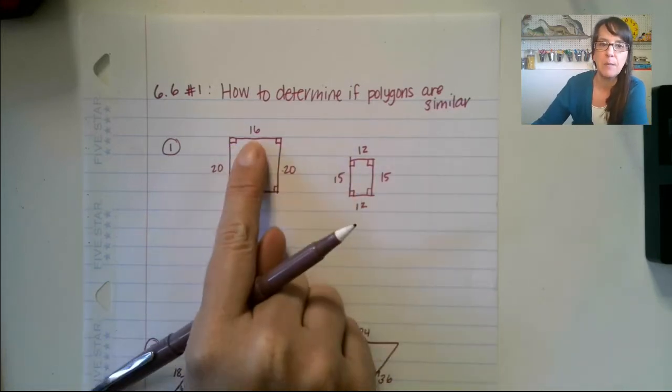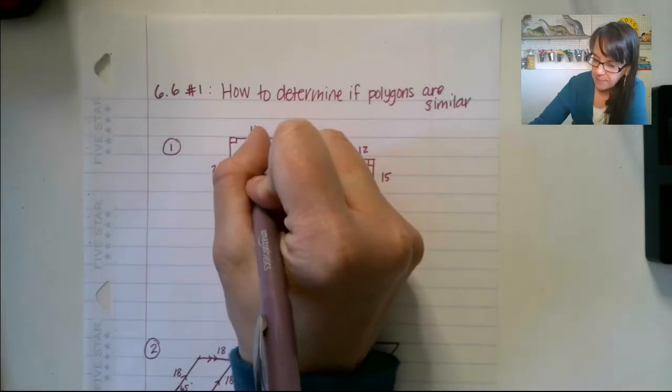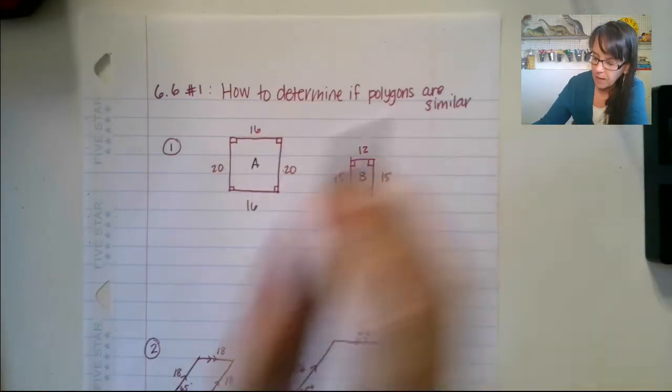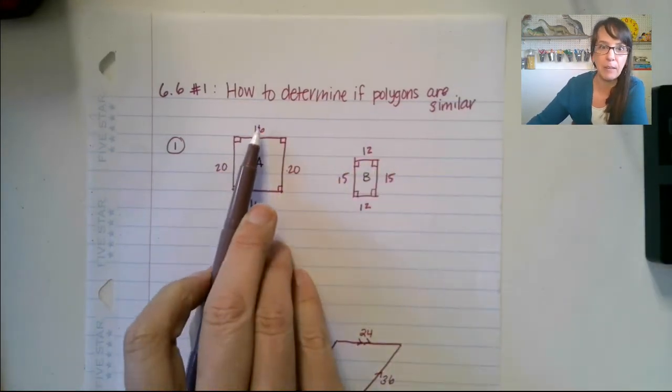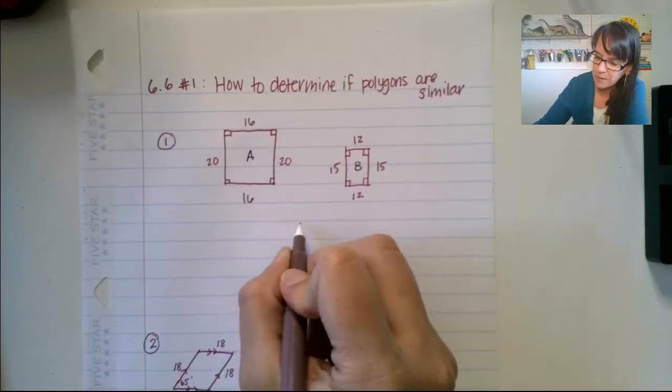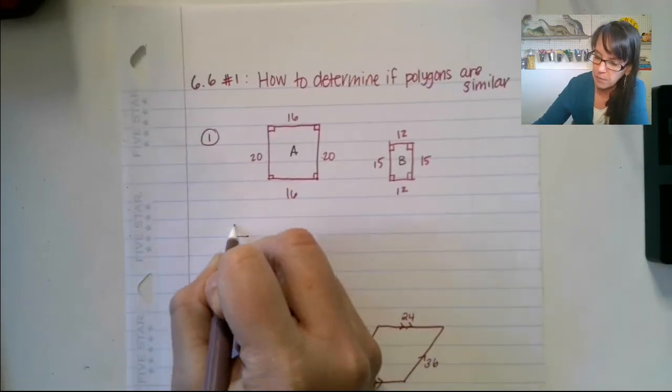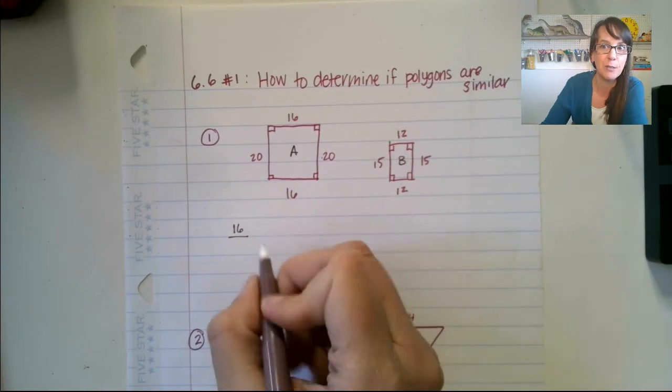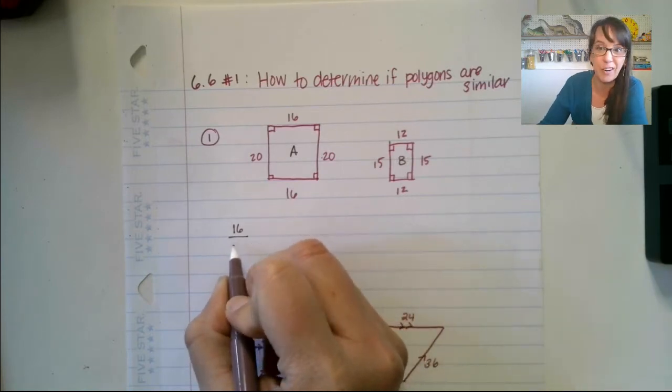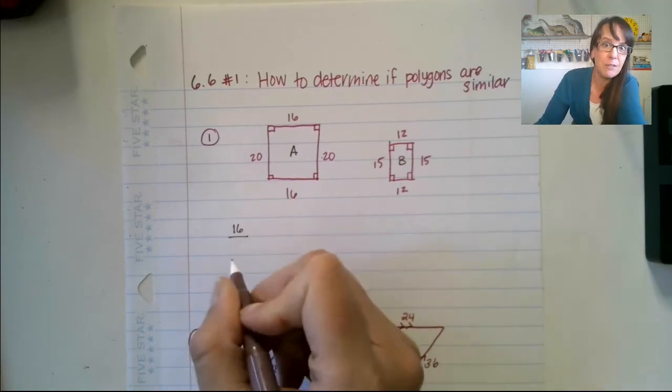First thing you want to do is compare, let's call this guy A, and we're gonna call this one B. On rectangle A, we have 16 over 20. We're gonna use some ratios to do this. Remember, a ratio of proportion is just two ratios comparing two ratios. And remember, a ratio? Just a fraction.